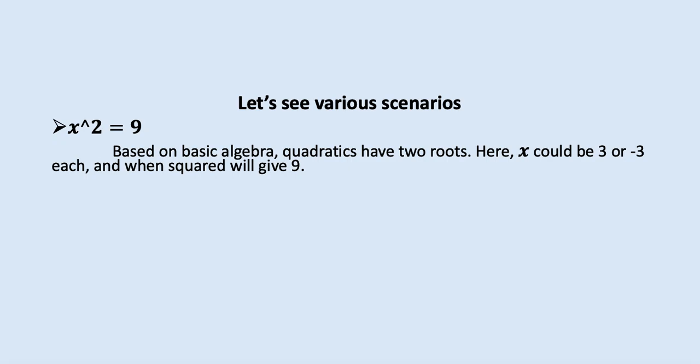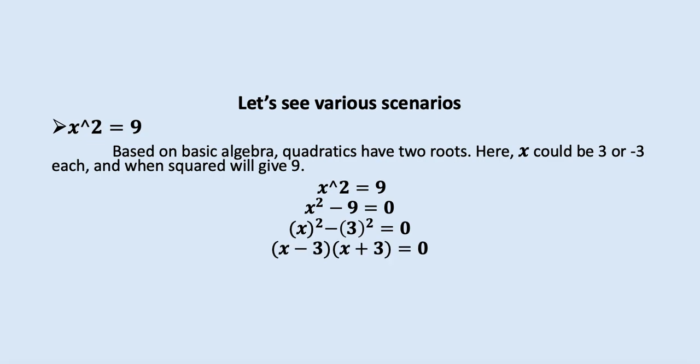We can also get this through algebraic manipulation. We have x² = 9. If we subtract 9 from both sides, we get x² − 9 = 0, which can be written as x² − 3² = 0. This is in the form a² − b² = (a + b)(a − b), so (x − 3)(x + 3) = 0. Equating each factor to 0, x could be 3 or x could be minus 3.